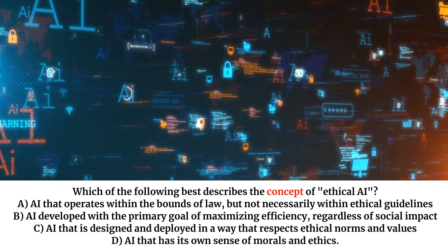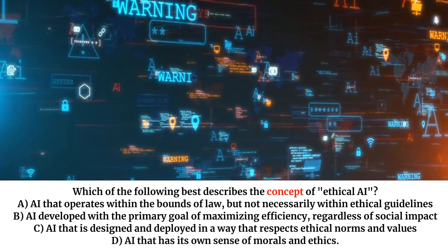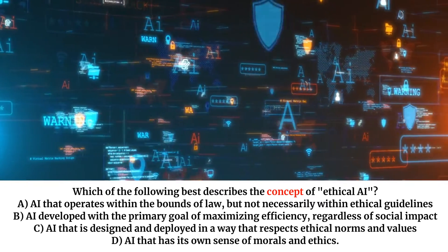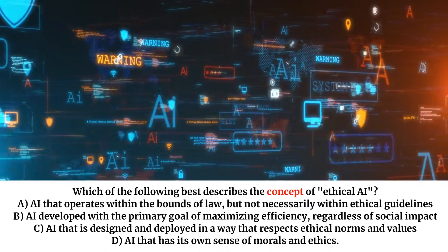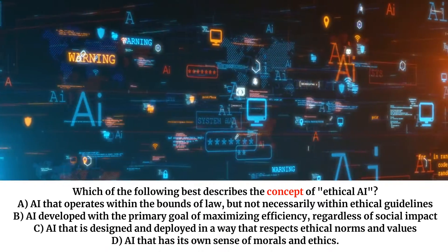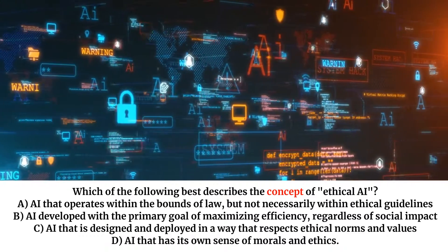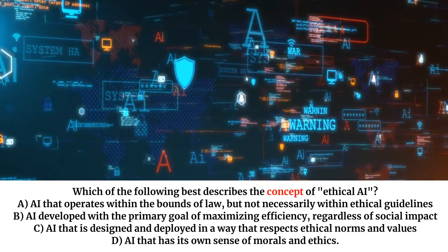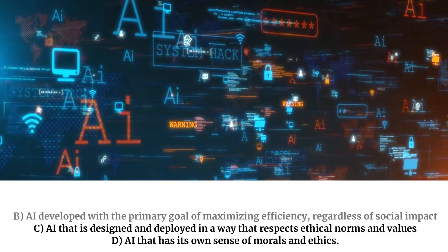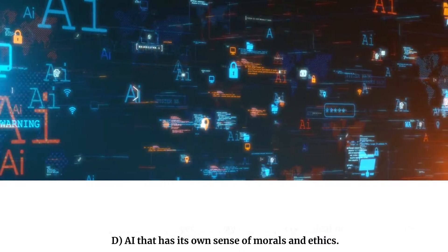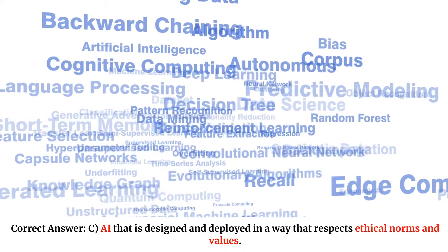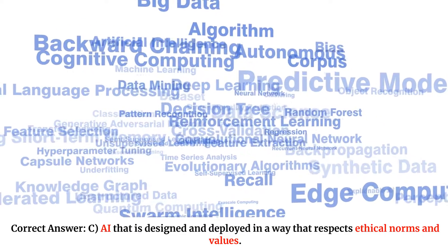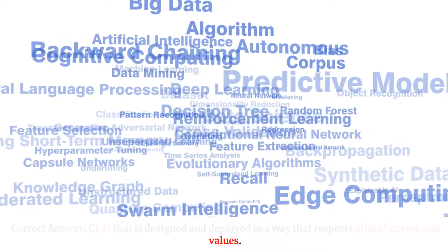Which of the following best describes the concept of ethical AI? A. AI that operates within the bounds of law, but not necessarily within ethical guidelines. B. AI developed with the primary goal of maximizing efficiency, regardless of social impact. C. AI that is designed and deployed in a way that respects ethical norms and values. D. AI that has its own sense of morals and ethics. Correct answer: C. AI that is designed and deployed in a way that respects ethical norms and values.